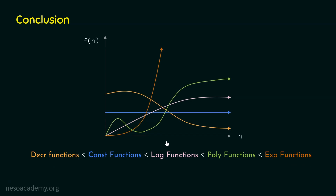This graph shows the plots of different functions. Observing the decrement function first: as n approaches to infinity, its growth rate decreases, making it asymptotically less than the other functions. Then comes the constant function — its growth rate does not change with the size of the input; it remains constant as n approaches infinity. Clearly, the constant function is asymptotically bigger than the decrement function.